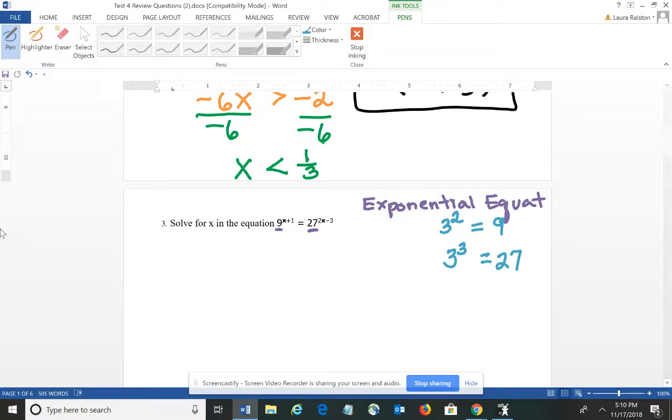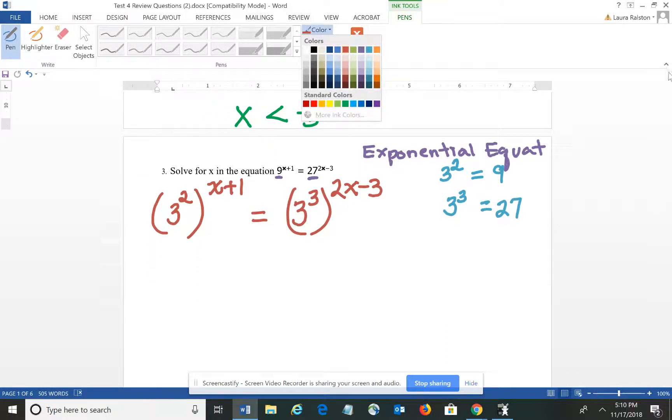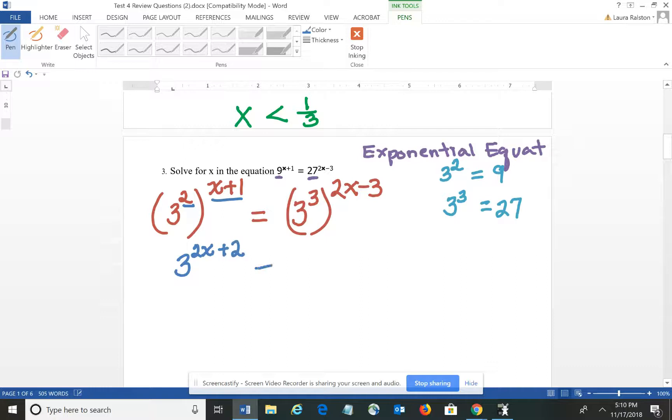So if I use that information to rewrite these two expressions, instead of having 9, I would have 3 to the 2nd raised to the X plus 1 equals 3 to the 3rd raised to the 2X minus 3. So that essentially what I've done by rewriting it is I now have the same base. I do need to do a little bit of simplification here. When you have an exponent raised to an exponent – remember we multiply, so we're going to have 3 raised to the 2X plus 2 – make sure you distribute – and I'm going to have 3 again, 3 times 2X minus 3 – we're going to have 6X minus 9.